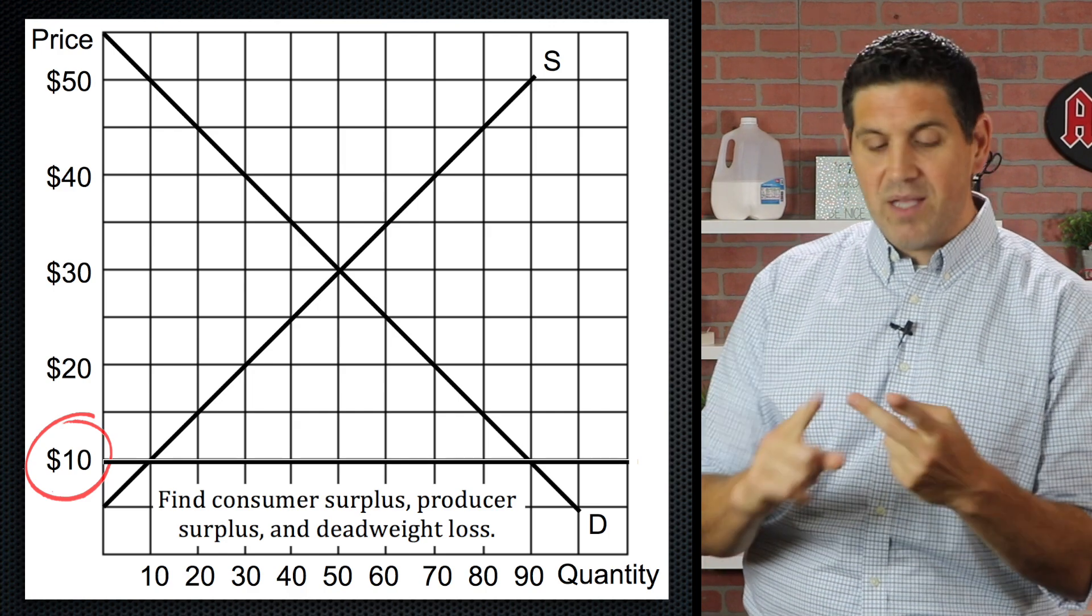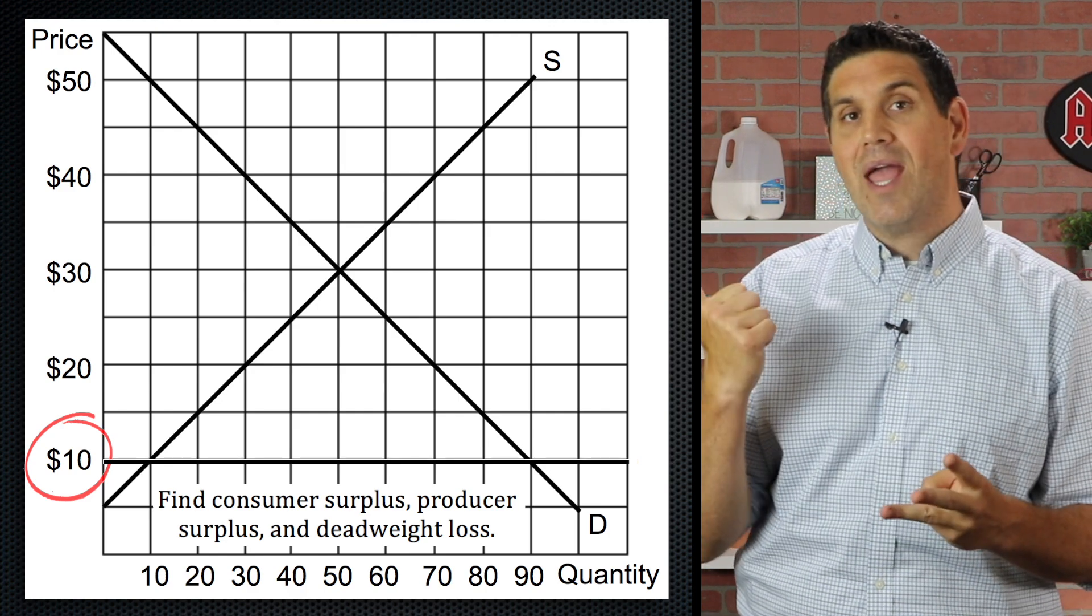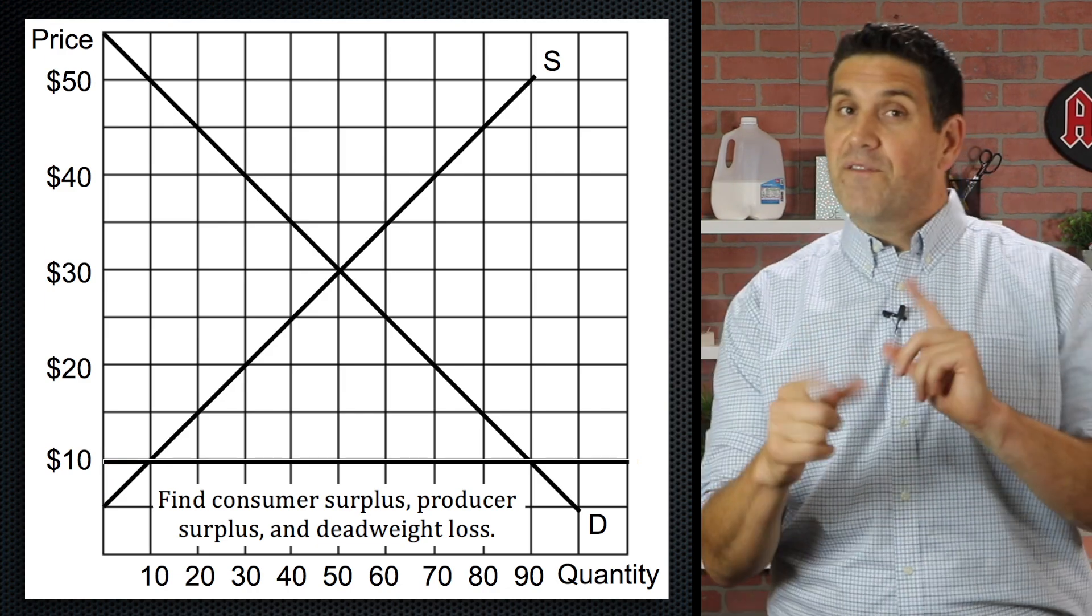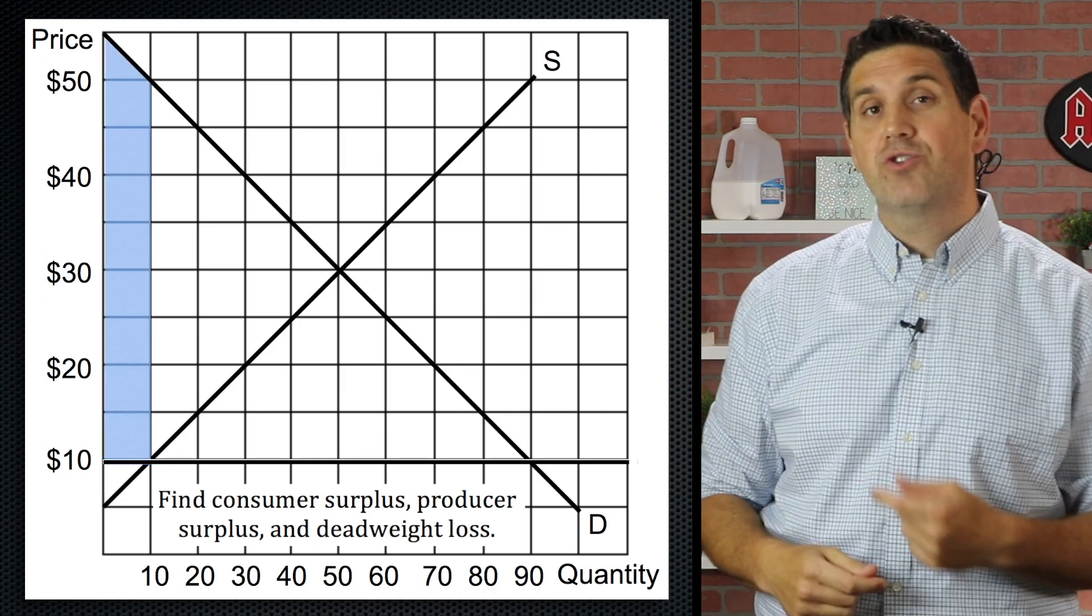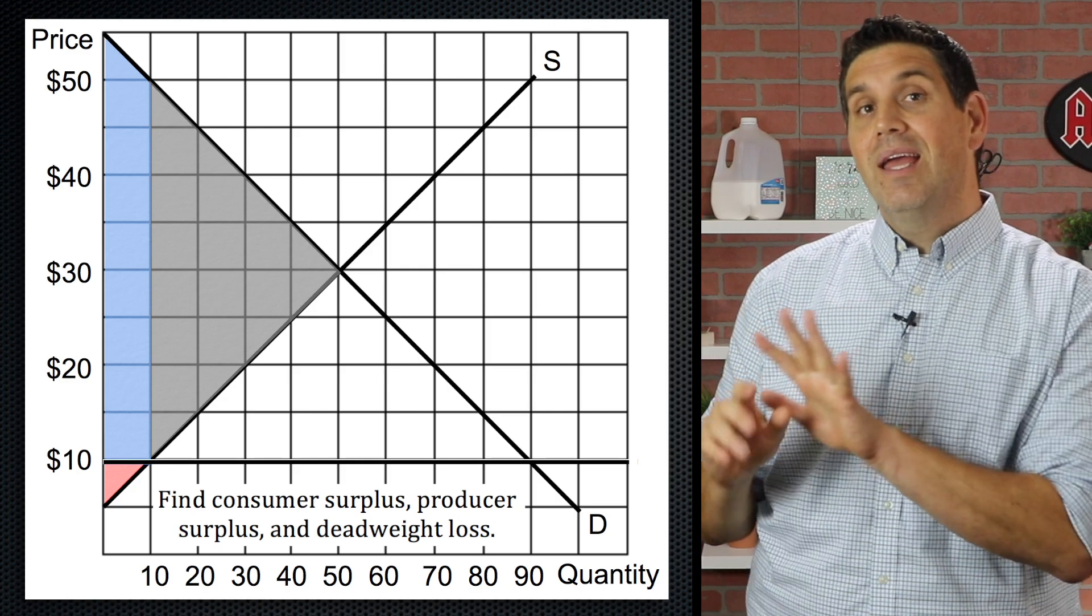Where's consumer surplus, producer surplus, and deadweight loss if we trade at that world price of $10. Now, if you think consumer surplus is here and producer surplus is here and deadweight loss is here, you made a mistake.